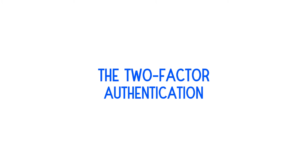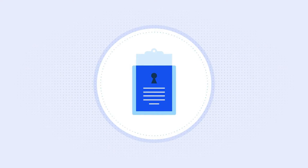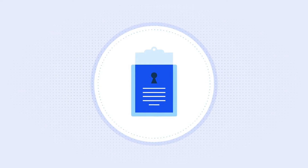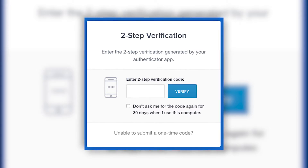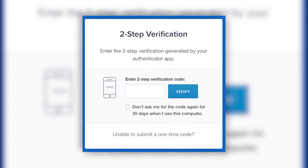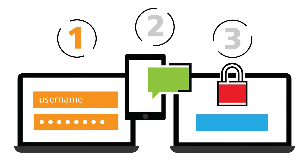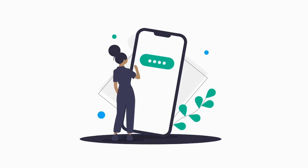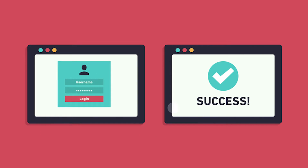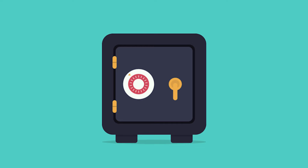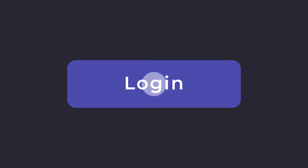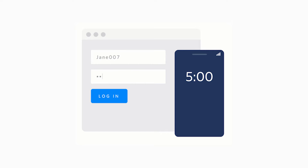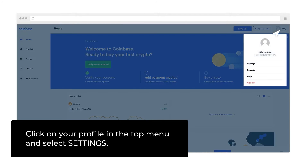The two-factor authentication. After you have verified your phone number and email address, add another step for extra security for your account. This is called the two-factor authentication. You might have heard of this, as many apps all over the world are slowly adopting it because of the high level of security it provides. The two-factor authentication makes sure that only someone who has physical possession of your device can use your Coinbase account. If someone gets to know your account's password, they would still not be able to log into it. To enable the two-factor authentication, go to Settings.